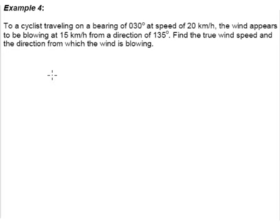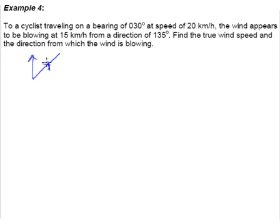First of all, like I always advise, go figure out what the vector of your cyclist is and what the vector of your wind — whatever vector that you know of. The first line tells us there's a cyclist travelling at a bearing of 30 degrees. On a bearing of 30 degrees, we know that this is the vector VC — please don't confuse the north with the vector — denoted as VC because we're talking about the cyclist at 20 km per hour.